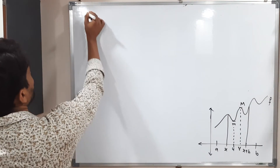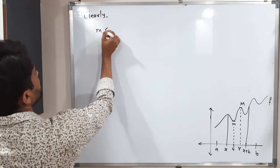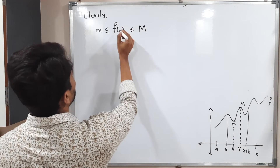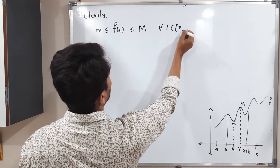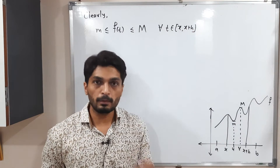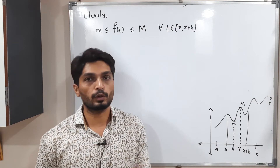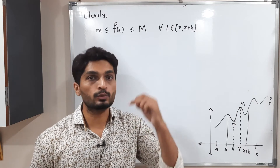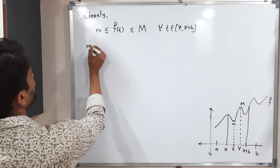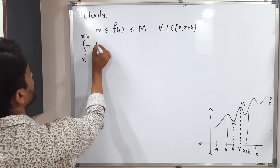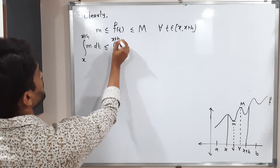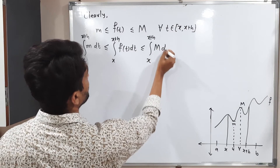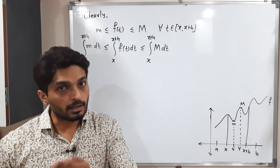Clearly, m ≤ f(t) ≤ M for all t in [x, x + h]. Integrating all sides with respect to t from x to x + h: m · ∫ₓˣ⁺ʰ dt ≤ ∫ₓˣ⁺ʰ f(t) dt ≤ M · ∫ₓˣ⁺ʰ dt. Since m and M are constants, they come outside the integral.